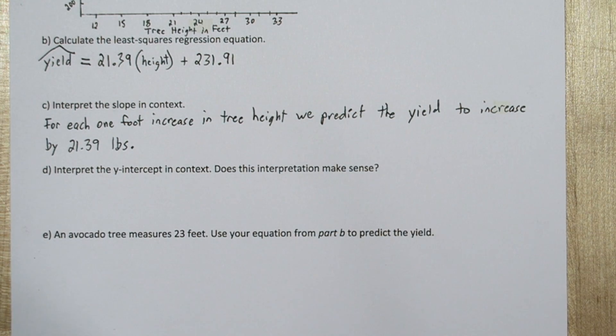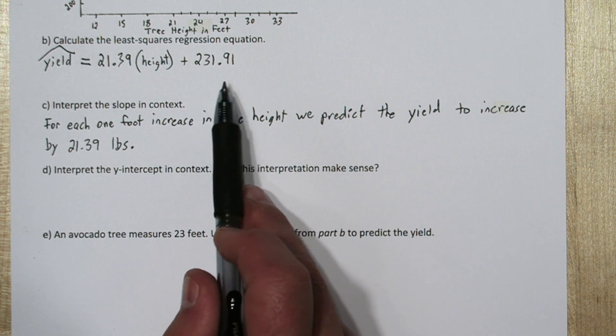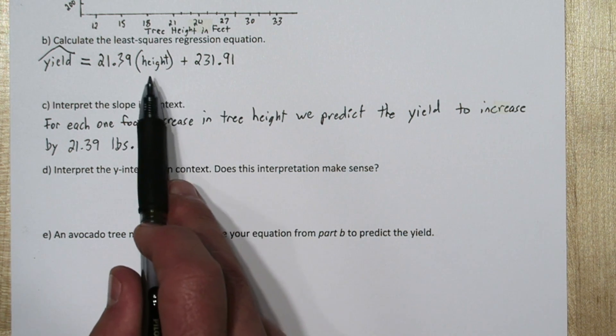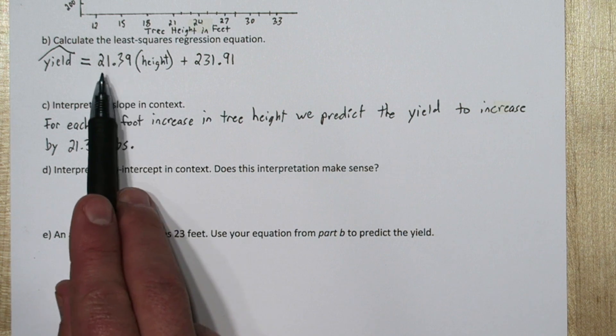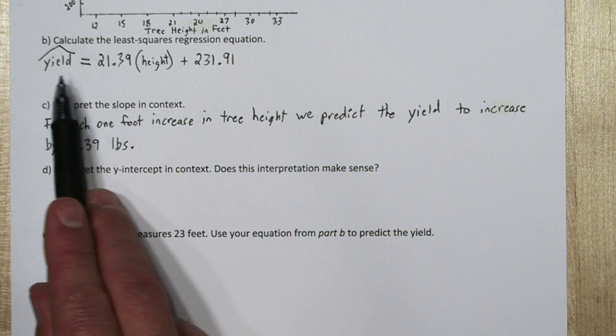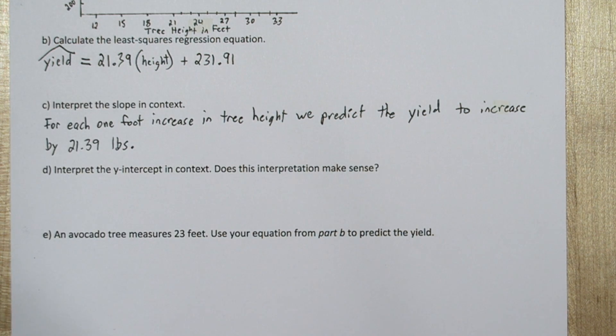Make sure you have a word like predicted in there. If you just say it will increase by 21.39 pounds, you're implying causation. And that's not correct, this is a prediction. Now let's interpret the y intercept. Now the y intercept comes into effect when the height of the tree is zero. So this whole quantity would be zeroed out, and our yield would be 231.91 pounds. So that doesn't make sense.